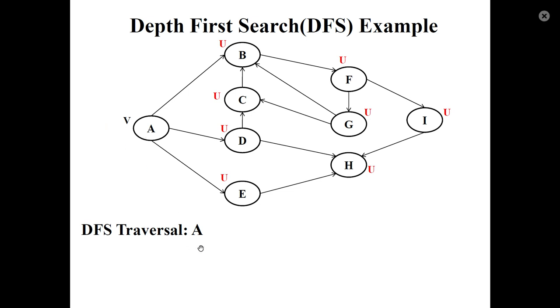Then look at A's neighboring nodes. A has outgoing edges to B, D, and E. These three are the adjacent nodes of node A. Select the first unvisited one, which is B. And B is visited.